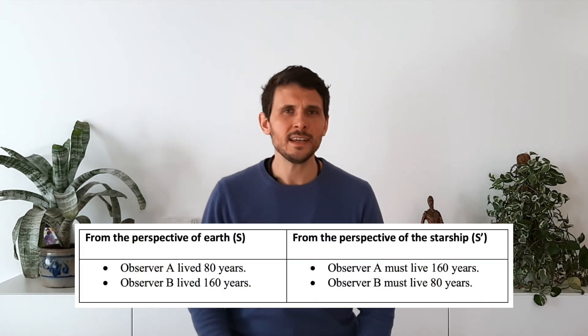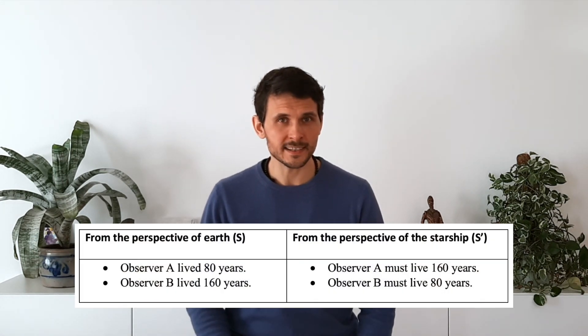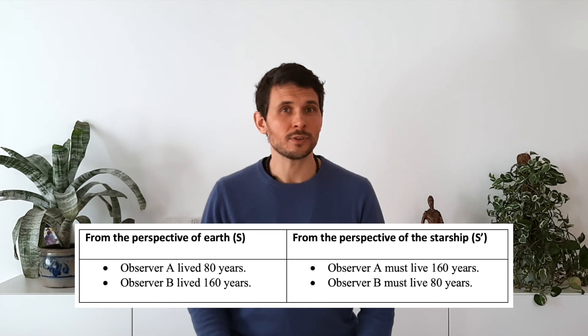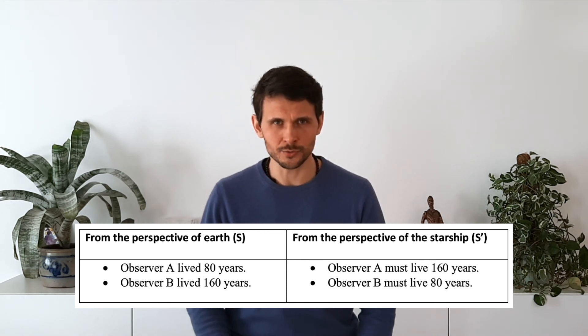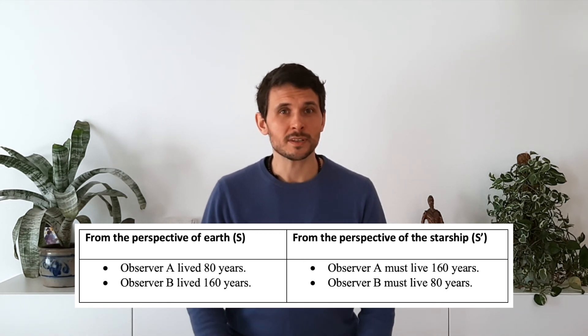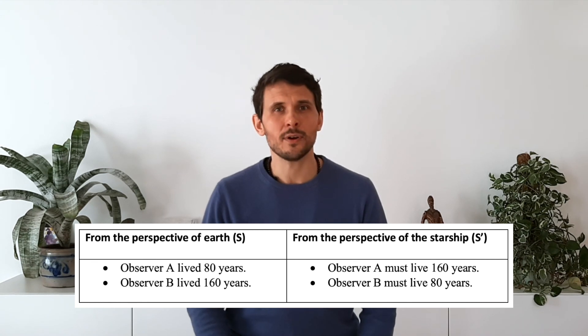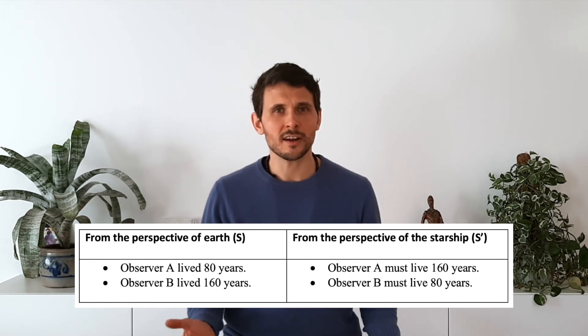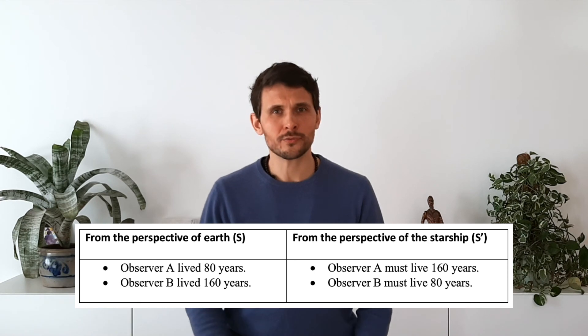Now, the next step is to shift the perspective to the rest frame of the starship. Using the logics of special relativity, we can conclude the following. Observer A will now live 160 years since his time is now dilated by a factor of 2. Observer B must live 80 years since he is now at rest. And the causes of death has to be the same as in the Earth frame.